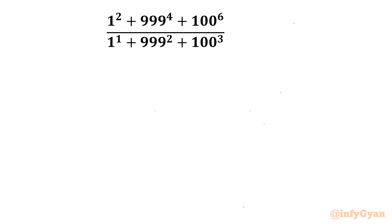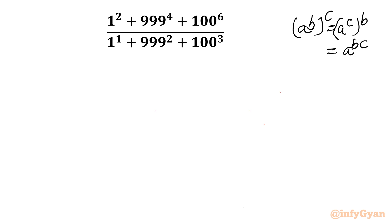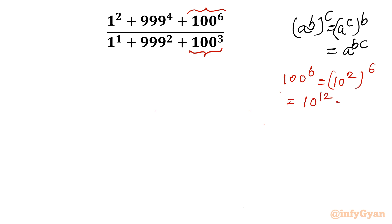Let's get started by writing one powerful exponent property: a^b whole power c is equal to a^(b×c). Let me consider the numerator 100^6 and denominator 100^3 separately first. So 100^6 = (10^2)^6 = 10^12 = (10^3)^4 = 1000^4.